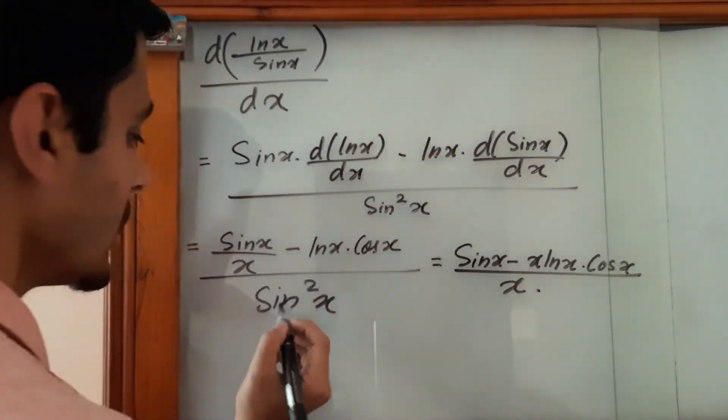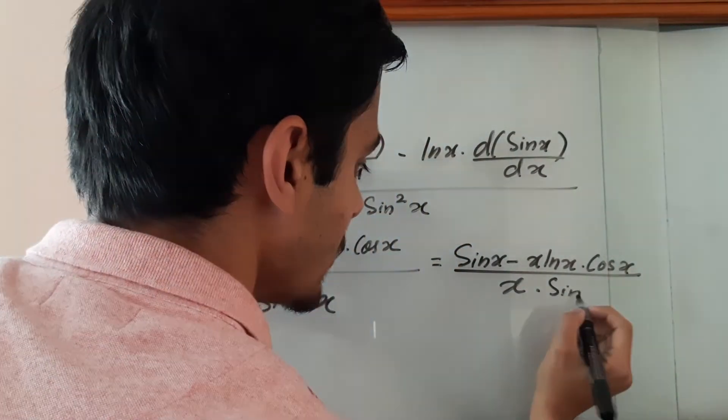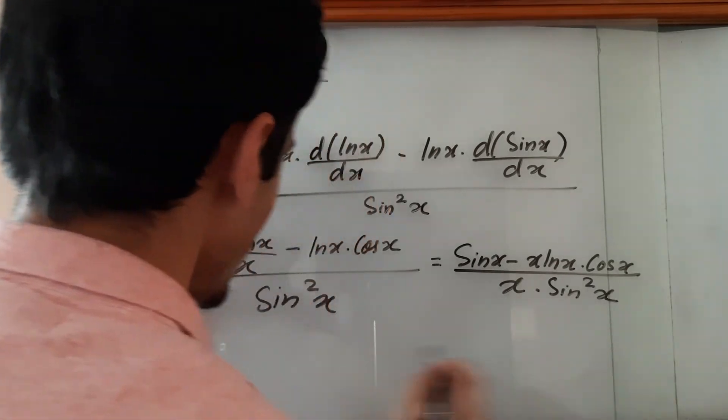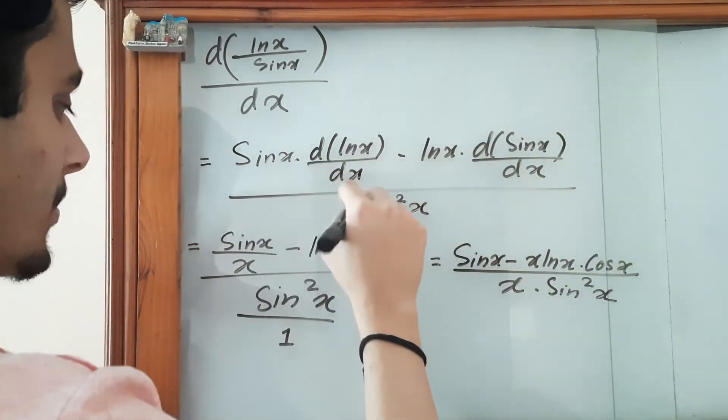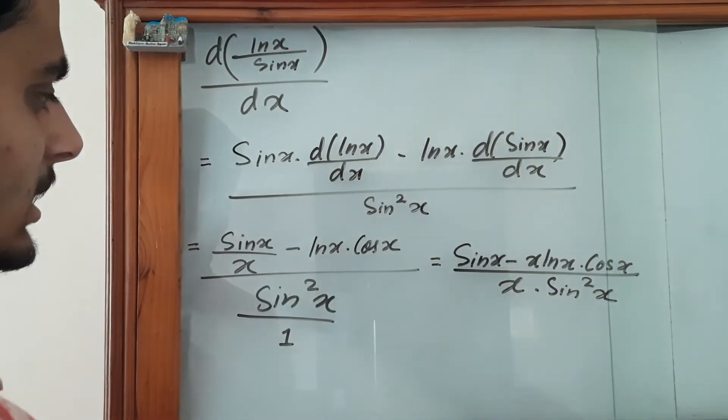Over x times sin²(x). So this is sin²(x) upon 1, so 1 goes up and sin(x) remains with this x.